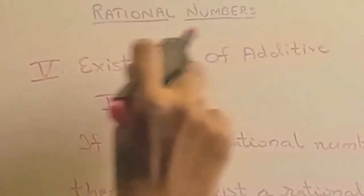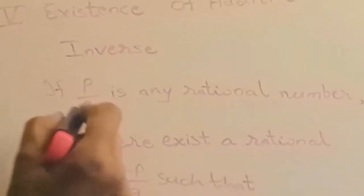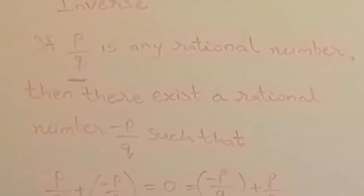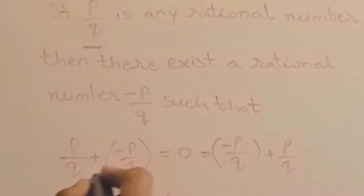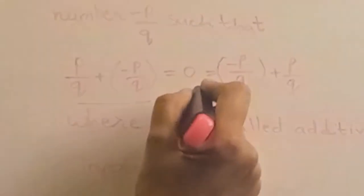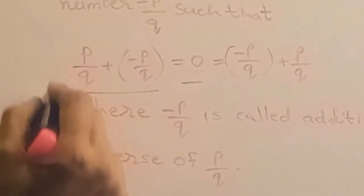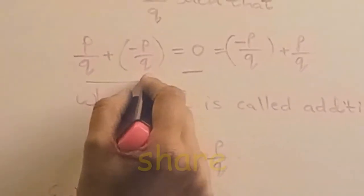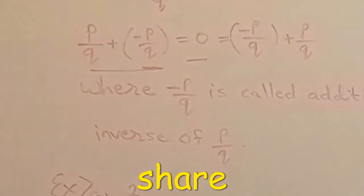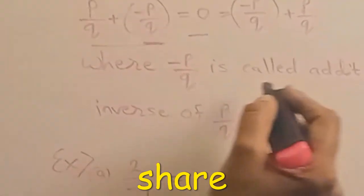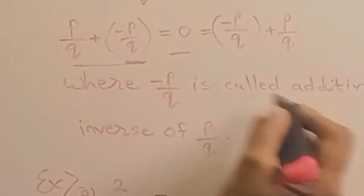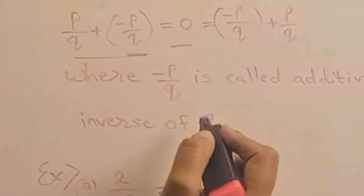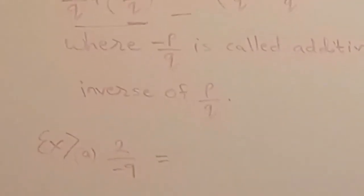Fifth property is existence of additive inverse. If p by q is any rational number, there always exists a rational number such that whenever you add it, the result is always 0. If p by q is a positive rational number, you add a negative rational number — just change its sign — and you get 0. So minus p by q is the additive inverse of p by q; just change the sign of the rational number.